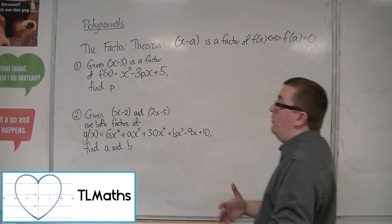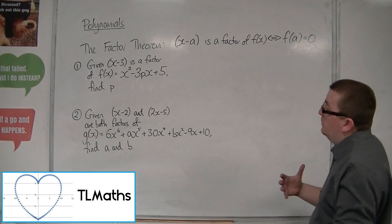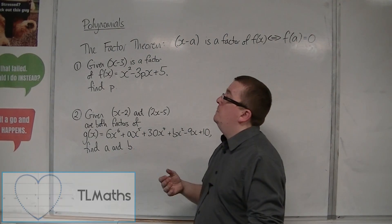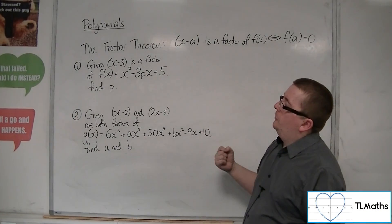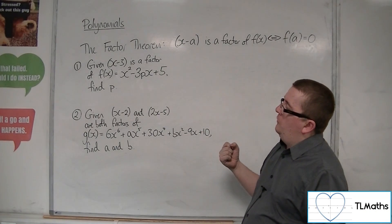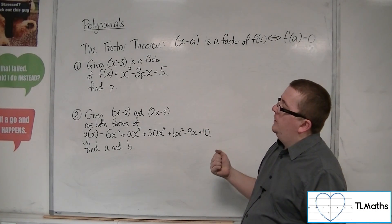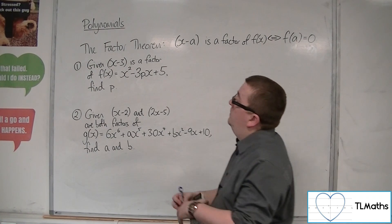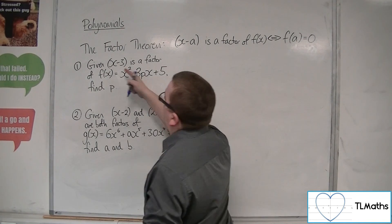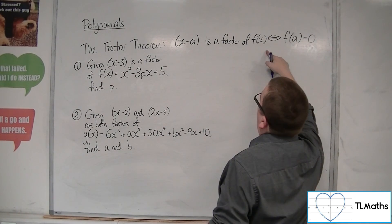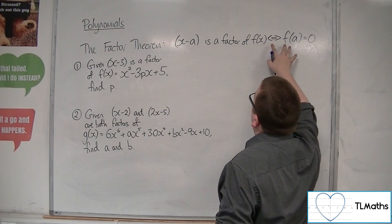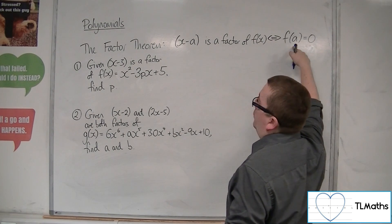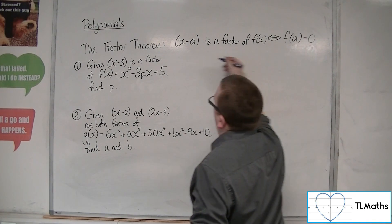Here are a couple of problems that involve using the factor theorem. Given that x minus 3 is a factor of f of x, find the value of p. The fact that x minus 3 is a factor of f of x means that f of 3 must be 0.